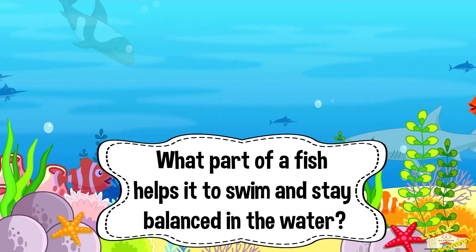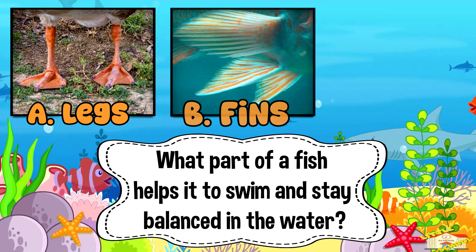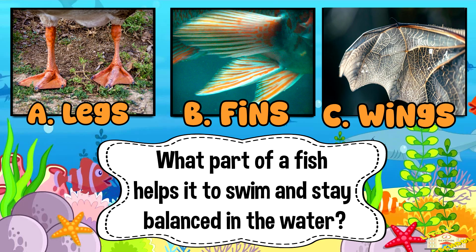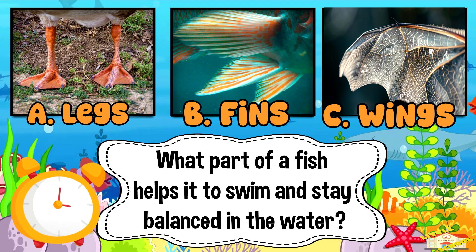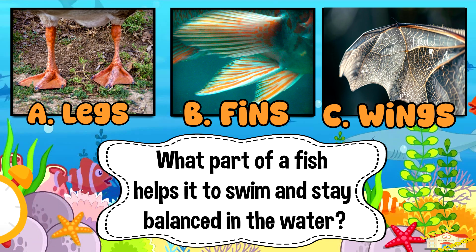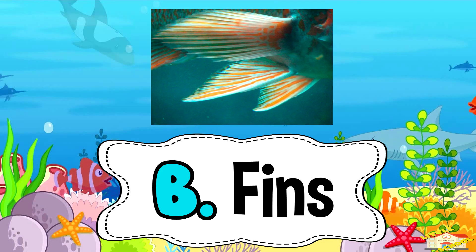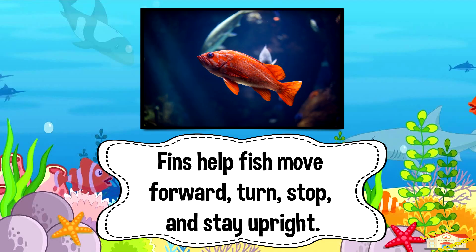What part of a fish helps it to swim and stay balanced in the water? A: legs, B: fins, or C: wings? Five, four, three, two, one. And the answer is B: fins. Fins help fish move forward, turn, stop, and stay upright.